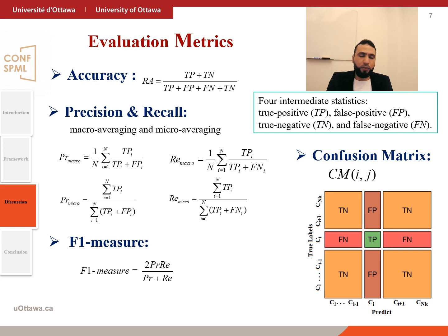There are two types of averaging: macro and micro. For macro, macro precision and recall is the normalization of the summation for every class. For micro, the equation is slightly different — it is averaging the numerator divided by averaging the denominator. F1 measure combines both metrics, and we will use F1 measure as it is well known and suitable to evaluate our findings.